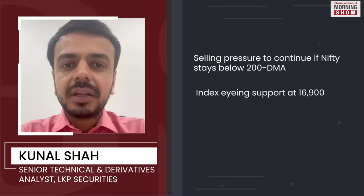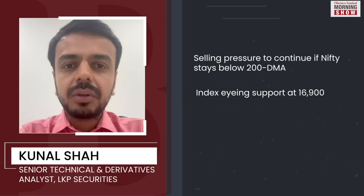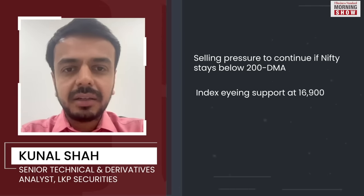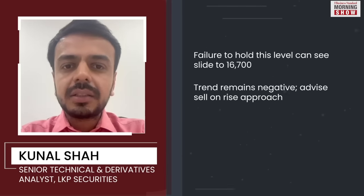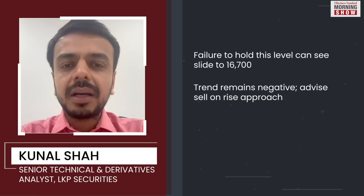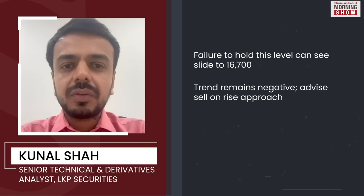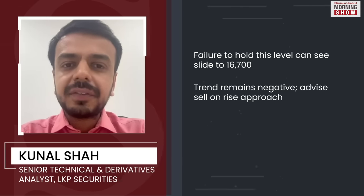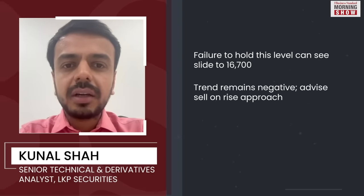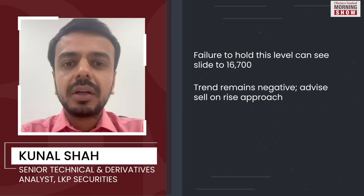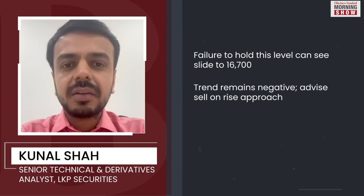Now, since we have corrected a lot, Nifty is trying to find support, and that support is at 16,900. If we manage to hold that support, we can expect a mild pullback recovery rally towards 17,300-17,462 zone. But if 16,900 is not held, we can expect the correction to again go towards the levels of 16,700.